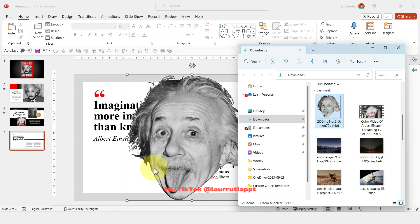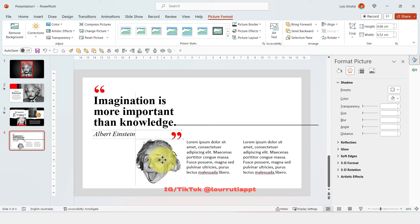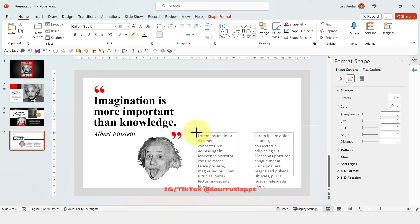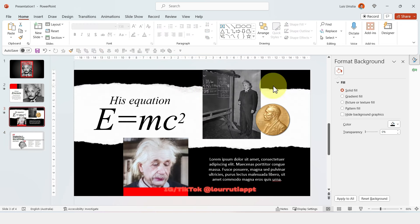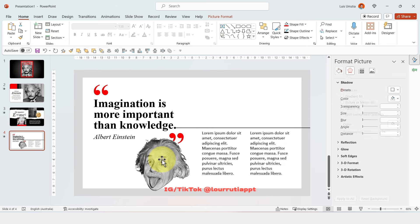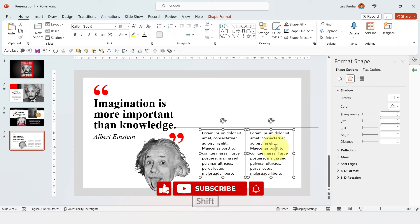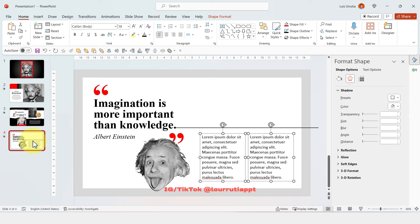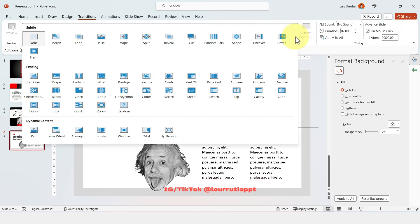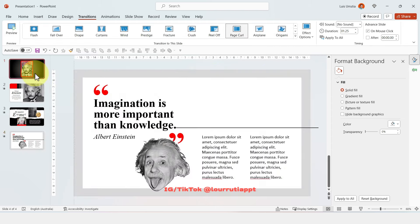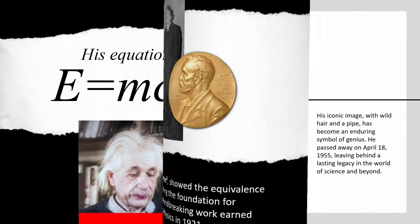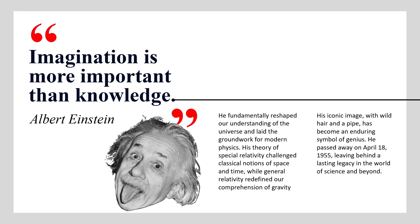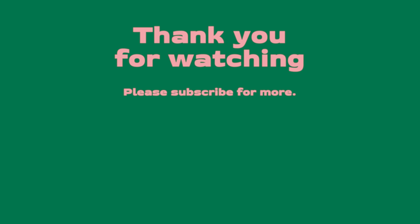Insert a PNG found on Google, make it smaller, and place it here — this layout looks really cool. We'll also add a subtle floating animation to the image by going back to the previous slide, copying the animation using the Animation Painter, and applying it to the new image. Finally, go to Transitions, open the dropdown menu, and click on Page Curl. And that's how I made this awesome presentation using PowerPoint! Remember to like and subscribe, check my website for templates, and follow me on Instagram and TikTok at lurutea PPT. Thank you so much for watching and I'll see you in my next video.